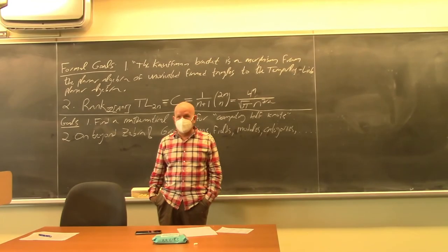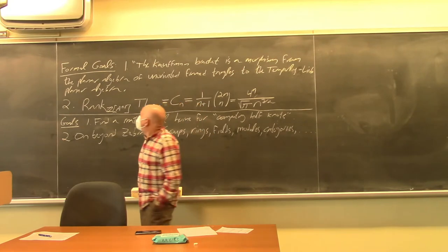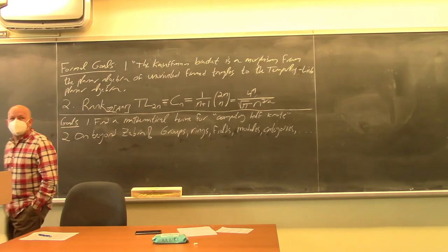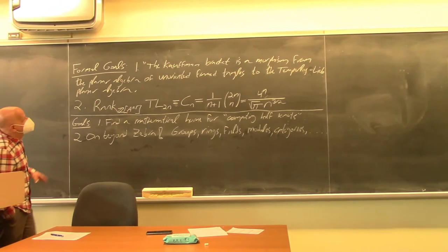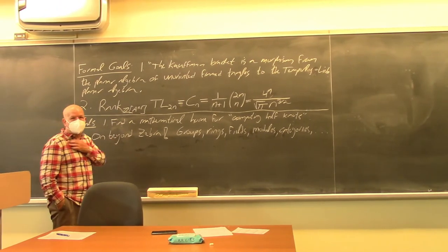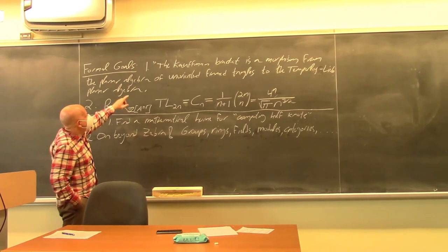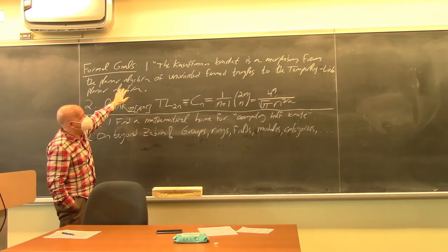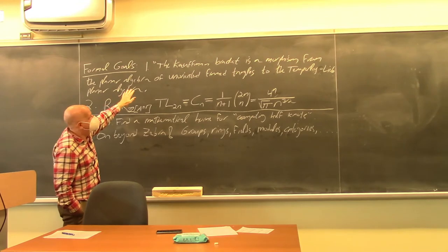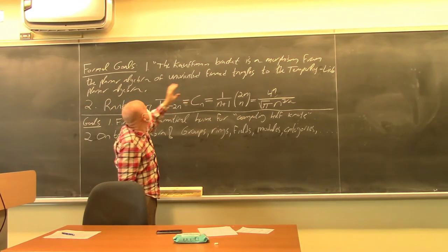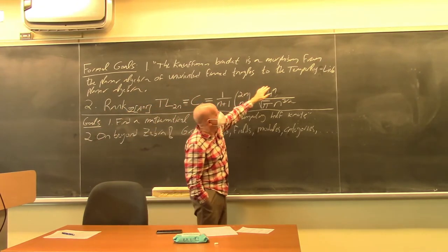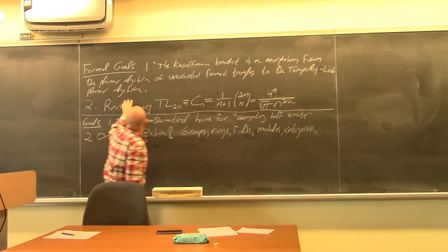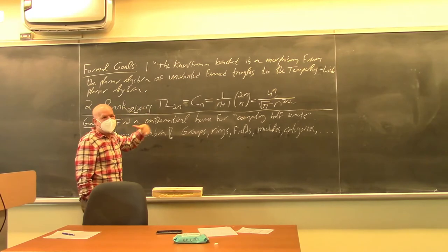Hello everybody. The formal goal for today is to make sense of the sentence: 'The Kauffman bracket is a morphism from the planar algebra of unoriented framed tangles to the Temperley-Lieb planar algebra.' I just need to define all the words here and then it's easy.